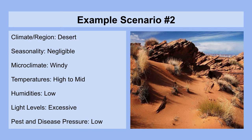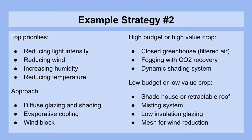The second example scenario finds us in a desert climate or region. Seasonality here is also negligible. The microclimate may also be windy. Temperatures will generally be very high in the daytime and fairly medium at night. Humidities will usually be very low all year round. Light levels are likely again to be excessive for your crops, and pest and disease pressures here can be much lower than in the tropics. Your top priorities are again reducing light intensity, reducing wind speed to reduce water loss, increasing humidity for a change, and definitely reducing the temperature.